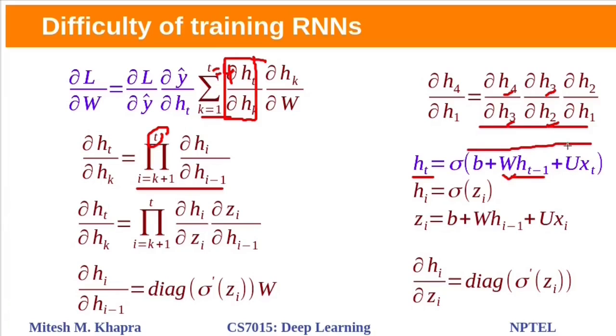Let's assume this entire expression as z, then this term dou h i by dou h i minus 1 can be written as this chain rule. This dou h i by dou z i will be diagonal matrix. And here we are taking partial derivative of this z i with respect to h i minus 1. So this term will be 0 and this term will become 0. Here derivative would be w. So the jacobian dou h i by dou h i minus 1 will be this one.